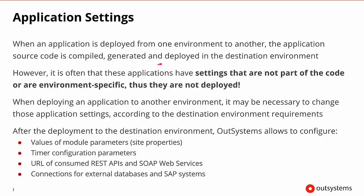Applications are deployed from one environment to another, and the application source code is compiled, generated, and moved to the destination environment. However, those applications often have settings that are not part of the source code, and those settings are therefore application and environment specific. Because they're not deployed, we need to be able to move them or adjust them in the new environment, so it may be necessary to copy or change those and get them into the destination environment.